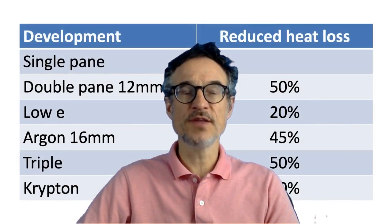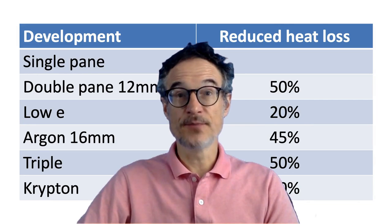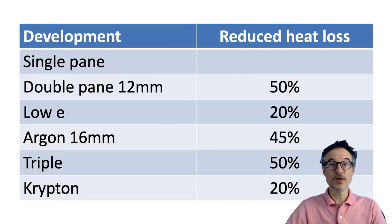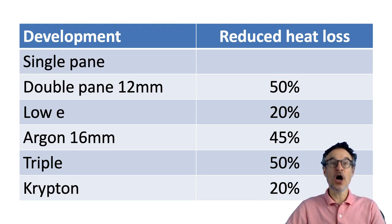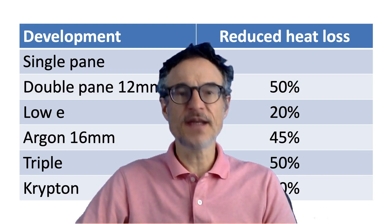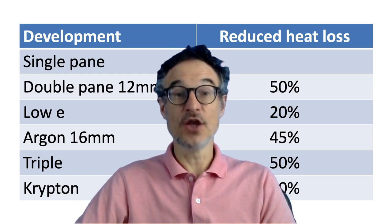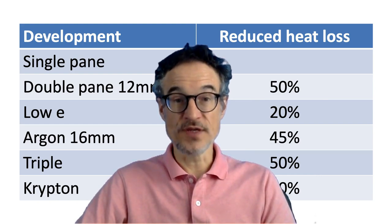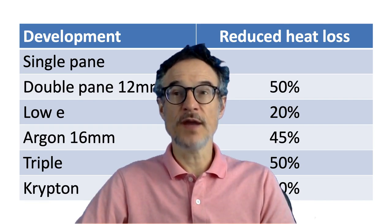Just to remind you from the last session, here are some improvements: double pane windows made windows 50% less heat loss; low-E makes a 20% difference; changing from air to argon and making it thicker makes a 45% difference; going to triple makes another 50% reduction in heat loss; going to krypton gives another 20% reduction. So you can get something like 90% less heat loss by going through all these steps when starting from single-paned glass.